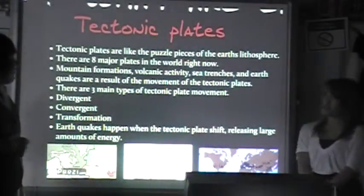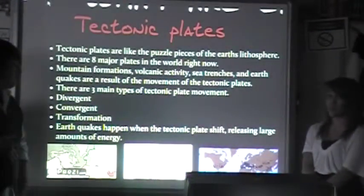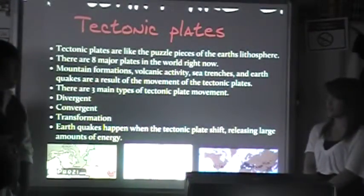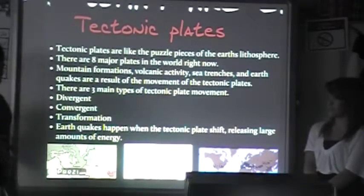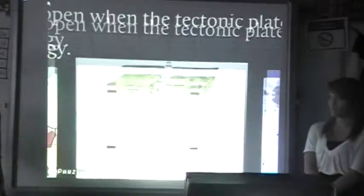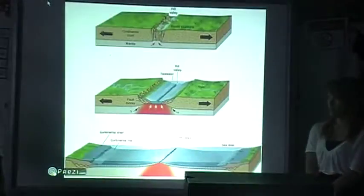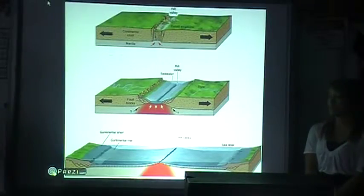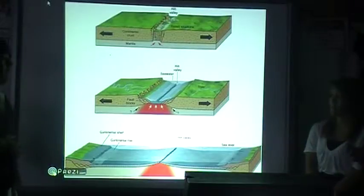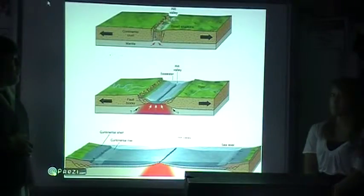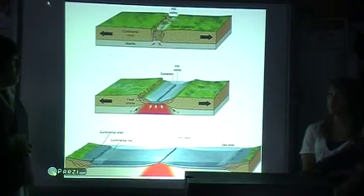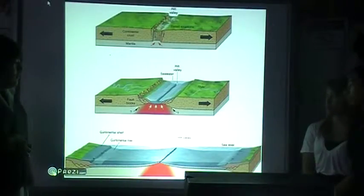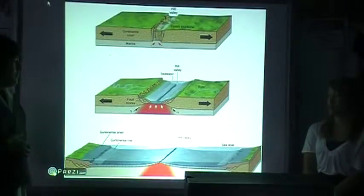There are three main types of plate movements. This is divergent — as you can see, the two plates move apart from each other. As they do, lava goes up and creates more land. As you can see down here, it creates a great valley.